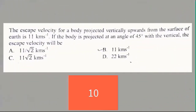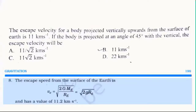The escape velocity of a body projected vertically upward from the surface of the earth is 11 km per second. Now the given condition is if the body is projected at an angle of 45 degrees with the vertical, then we have to find the escape velocity. In this relation, escape velocity is independent of the angle of projection. That means at whatever angle the body is projected, the escape velocity will remain the same. So it will still be 11 km per second.